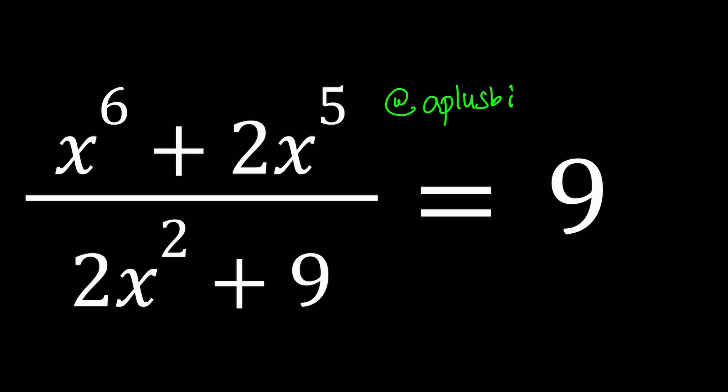So to be able to solve a problem like this, first of all notice that the denominator cannot be 0 for real values of x because 2x squared plus 9 cannot even be 0, let alone be negative, right? So what do we do then? We can safely multiply both sides by that and eliminate the fraction because who likes fractions?